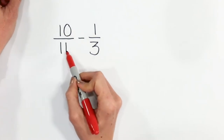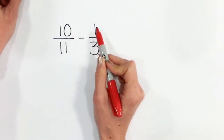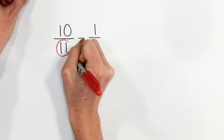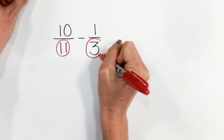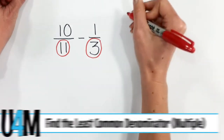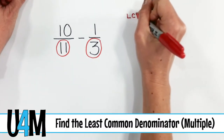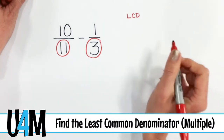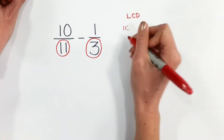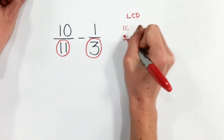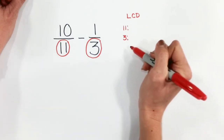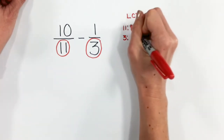Here we have ten-elevenths minus one-third. So the first step is to check out our denominators. Our denominators are not the same, so we need to make them the same by finding the least common denominator. In order to do that, we're going to list out our multiples of eleven and our multiples of three to find out which multiple is the smallest multiple that they have in common. So let's go ahead and do that.